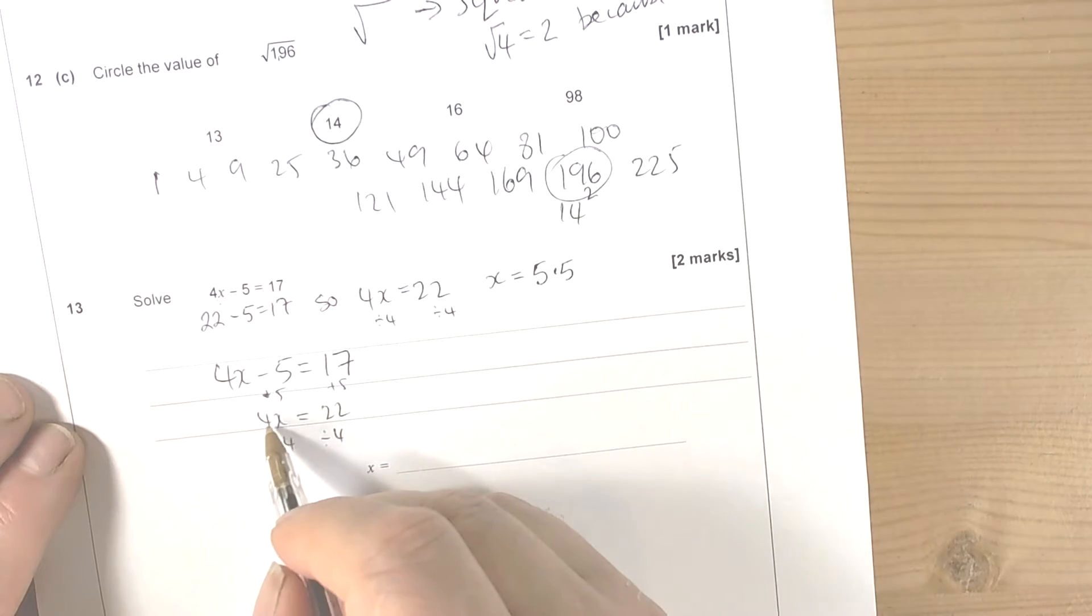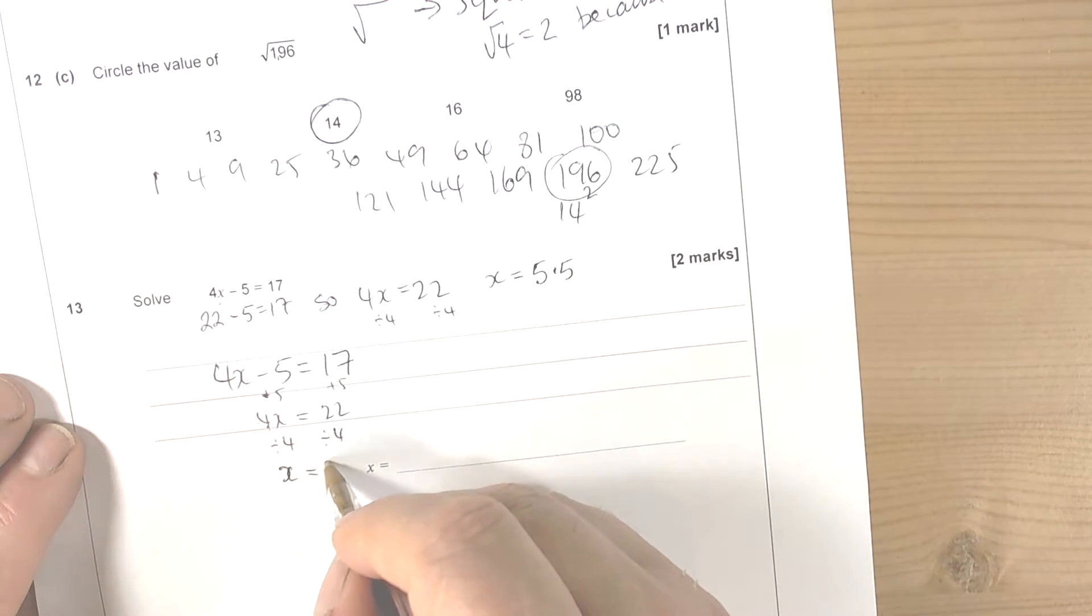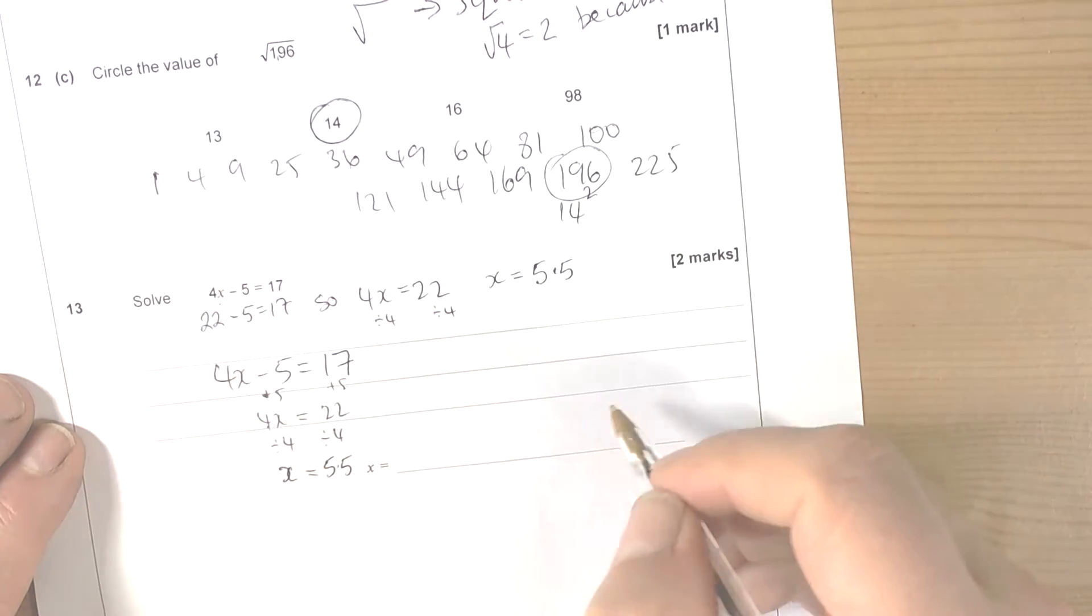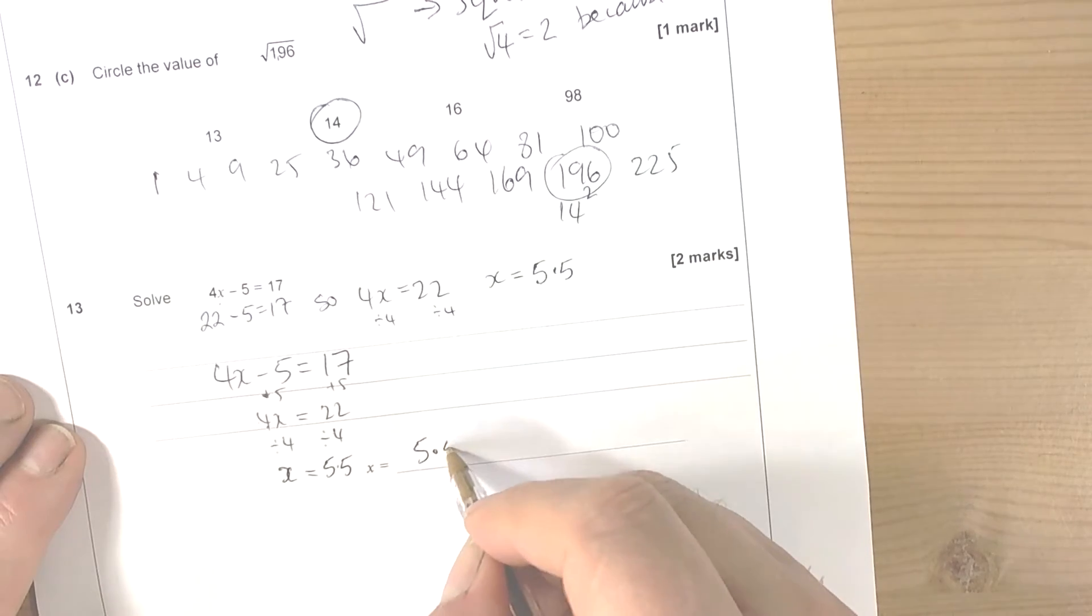And then we could divide by 4, because that's the opposite of timesing, because the number next to the letter means timesing. And when we do 4 divided by 4 we get 1, so that's 1x. And when we do 22 divided by 4 we get 5 and a half again. So we're pretty convinced the answer's going to be 5 and a half.